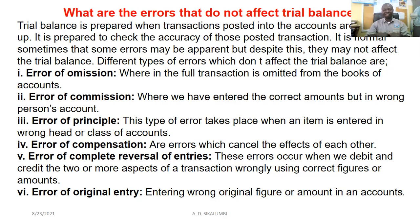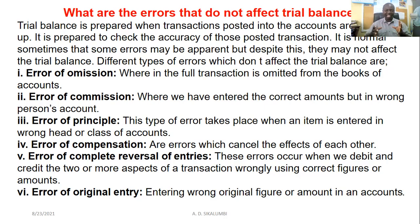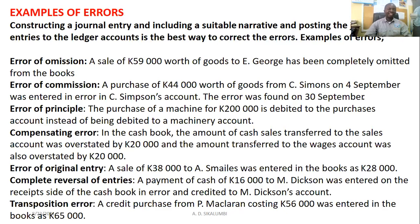Now we are talking about errors that cannot prevent the trial balance from balancing. These errors are: error of omission, error of commission, error of principle, error of compensation, complete reversal of entries, and error of original entry. Let's critically look at these with examples.